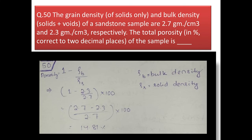Next question: the grain density and bulk density of a sandstone sample are 2.7 g/cc and 2.3 g/cc respectively. Find the total porosity in percentage. Using the formula: porosity = 1 − (ρB/ρS), where ρB is bulk density and ρS is solid (grain) density. Putting in the values gives porosity = 14.81%.